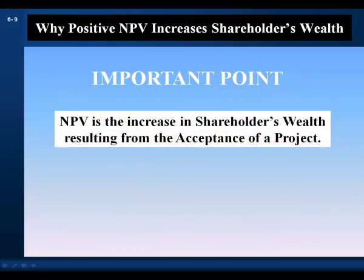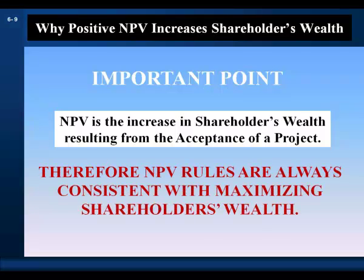The important point: in the context of a corporation, by definition, net present value is the increase in shareholders' wealth resulting from the acceptance of a project. Therefore, net present value rules are always consistent with maximizing shareholders' wealth. When we evaluate the other decision rules, we compare their decisions with those made by the NPV rule. If they make the same decision, they are consistent with shareholder wealth maximization; if different, they are inconsistent.